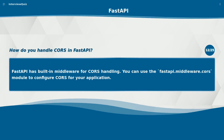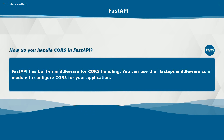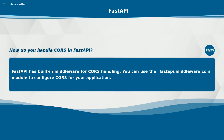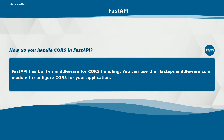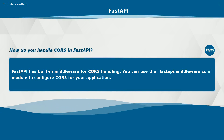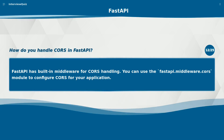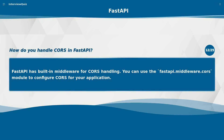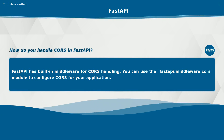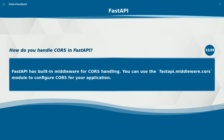How do you handle CORS in FastAPI? FastAPI has built-in middleware for CORS handling. You can use the fastapi.middleware.cors module to configure CORS for your application.